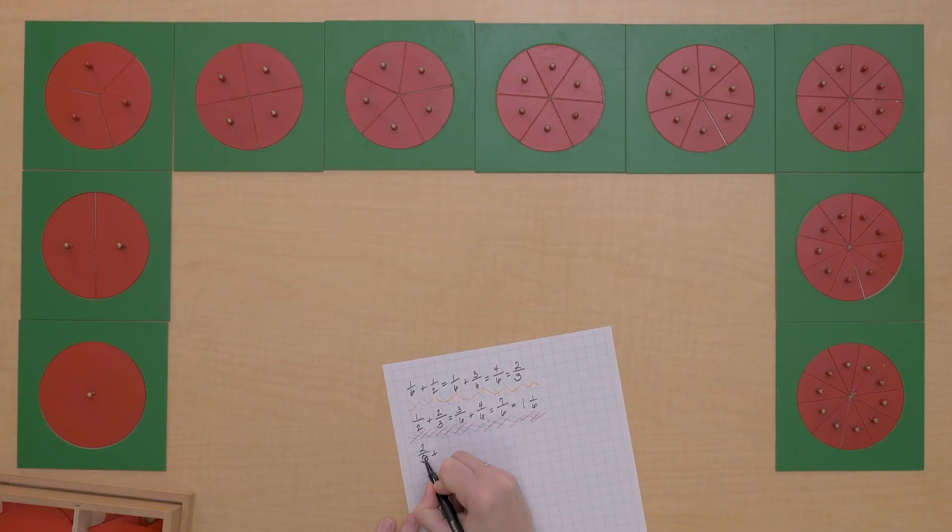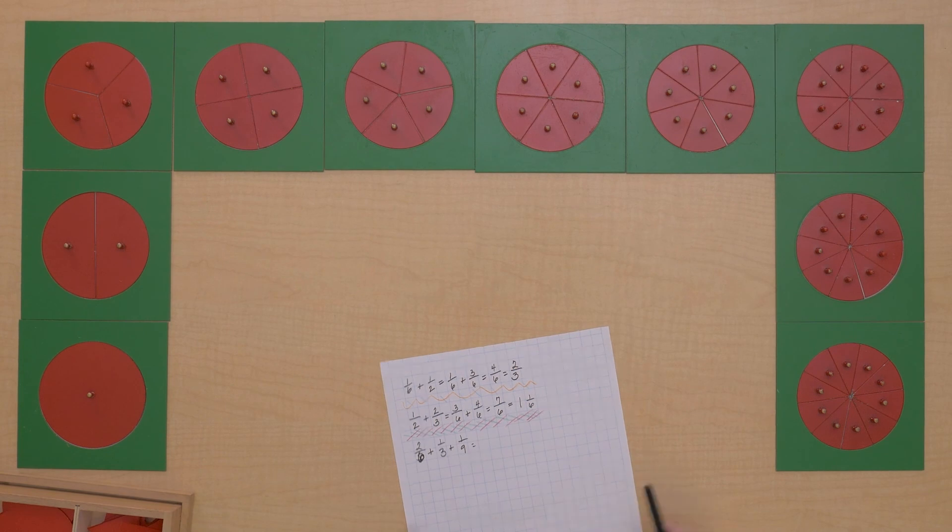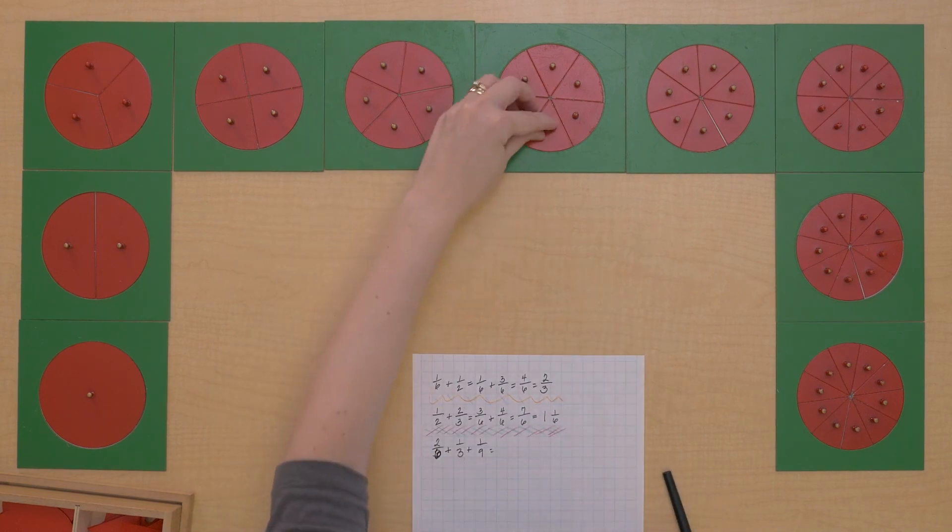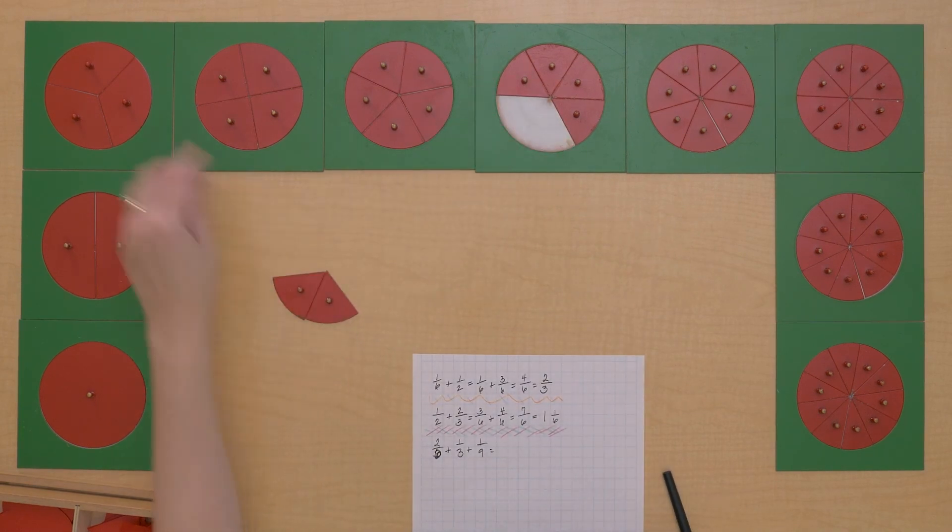Okay, I have another problem for us to try. Let's try two-sixths plus one-third plus one-ninth. So two-sixths plus one-ninth.